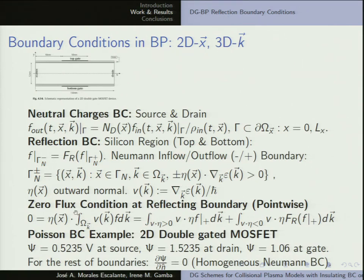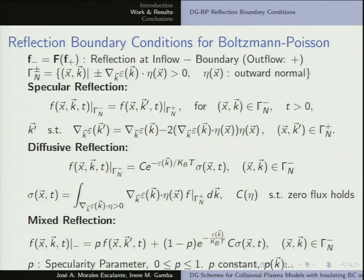For the Poisson part, what you usually have is a given potential at the source, drain, and maybe the gate. What we present for study is simpler — we simulate silicon in two dimensions with reflection conditions on this part. We won't need the potential at the gate, so it's just Neumann conditions at the reflecting boundary.